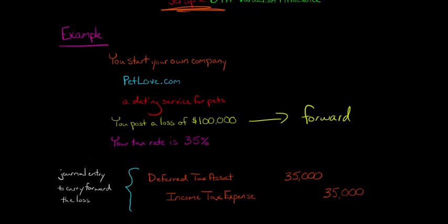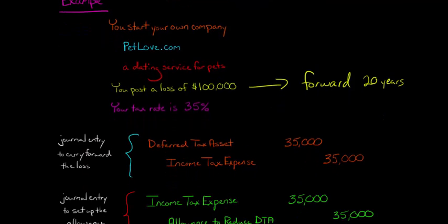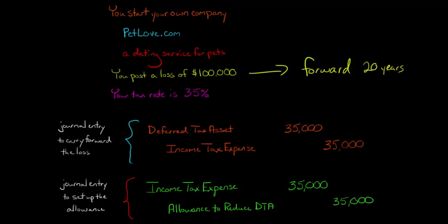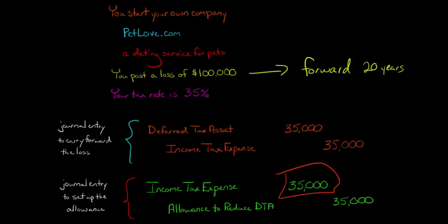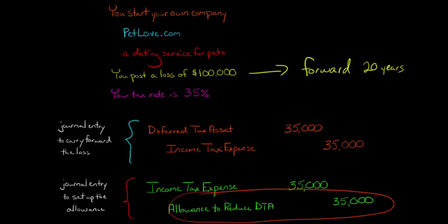But let's say your accountant says that in the next 20 years — because you can only carry forward for 20 years — you're not going to have any profit or taxable income against which you can offset that loss. So you've got to set up an allowance account, a valuation allowance. You debit Income Tax Expense for $35,000, which reverses what you did before when you credited it, and you credit the allowance to reduce Deferred Tax Asset for $35,000.